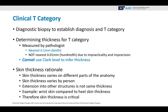Regarding the clinical T category, a diagnostic biopsy is needed to establish the diagnosis and the T category. In determining the thickness for the T category, this is measured by the pathologist to the nearest tenth of a millimeter, not the nearest one hundredth of a millimeter, due to impracticality and imprecision. This was the pathologist's decision a few years ago. You cannot use Clark level to infer thickness.